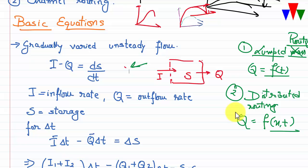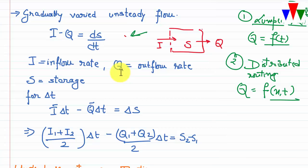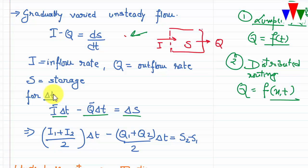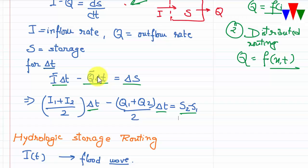The original continuity equation for a time interval delta t is: average inflow minus average outflow equals change in storage. Average inflow for that period is (I1 + I2)/2, and average outflow is (Q1 + Q2)/2, so: (I1 + I2)/2 × Δt − (Q1 + Q2)/2 × Δt = S2 − S1. From this basic equation all our routing equations will be derived.